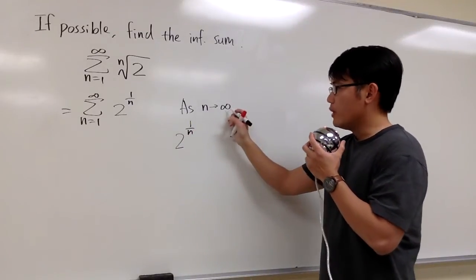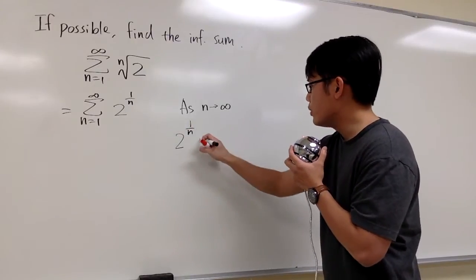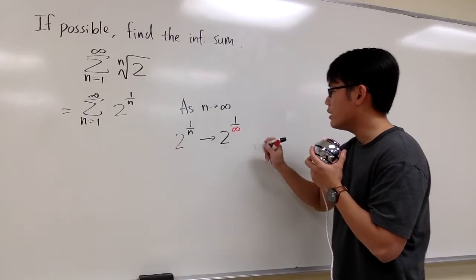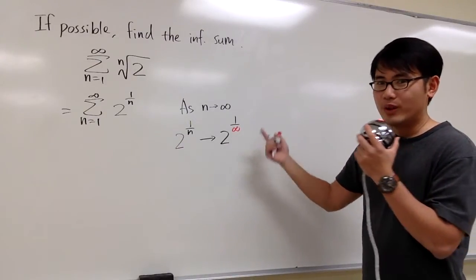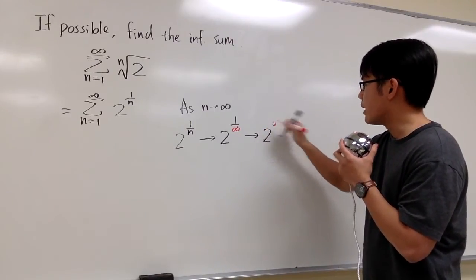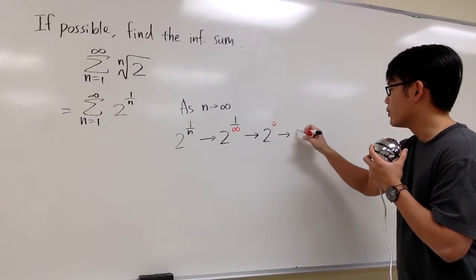As n goes to infinity, we can just plug infinity to n to see what happens. This right here will approach 2 to the 1 over infinity power, and then 1 over infinity, we can draw a conclusion, 1 over infinity is 0. So this right here approaches 2 to the 0 power, and we know 2 to the 0 is 1. So this approaches 1.